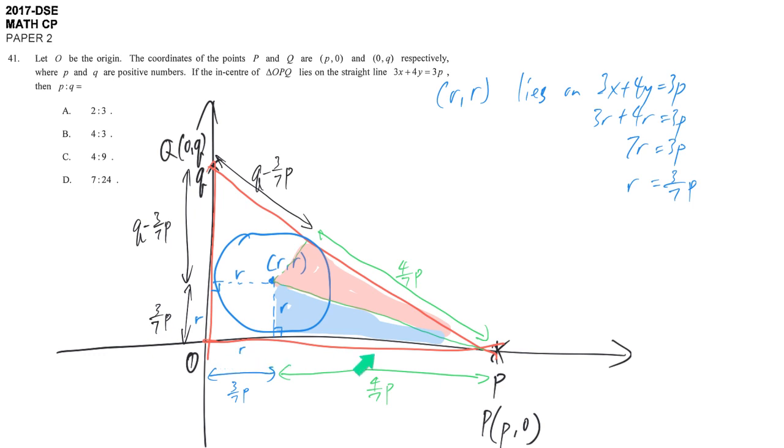Using the segment lengths, we can express PQ in two ways. By the tangent property, PQ = (4/7)P + (Q - 3/7P). By the distance formula, PQ = √(P² + Q²). Now I'm going to write that down and form an equation.